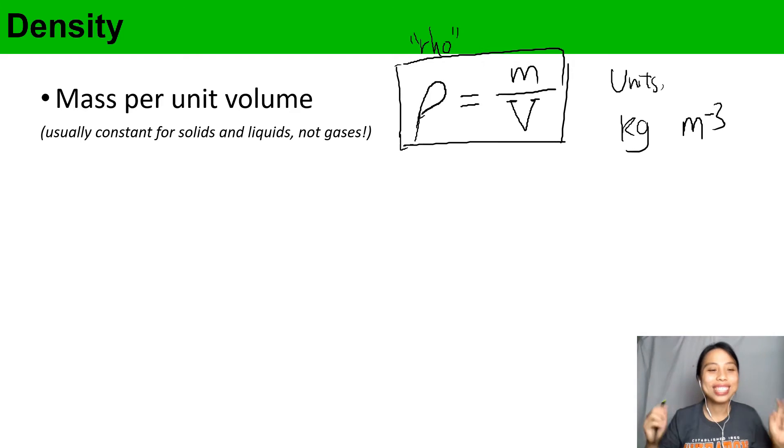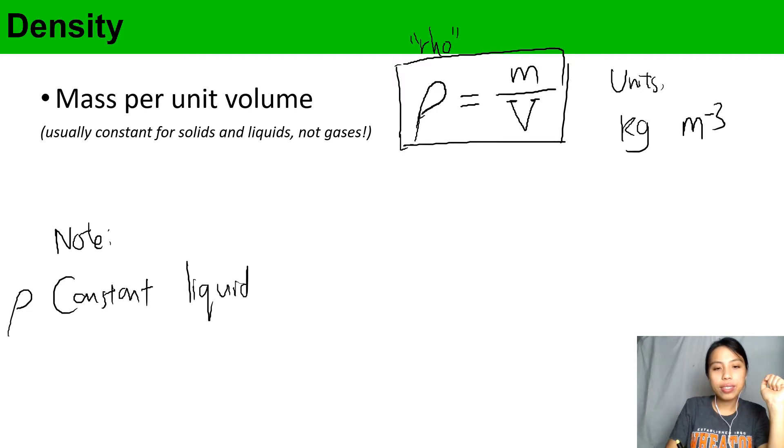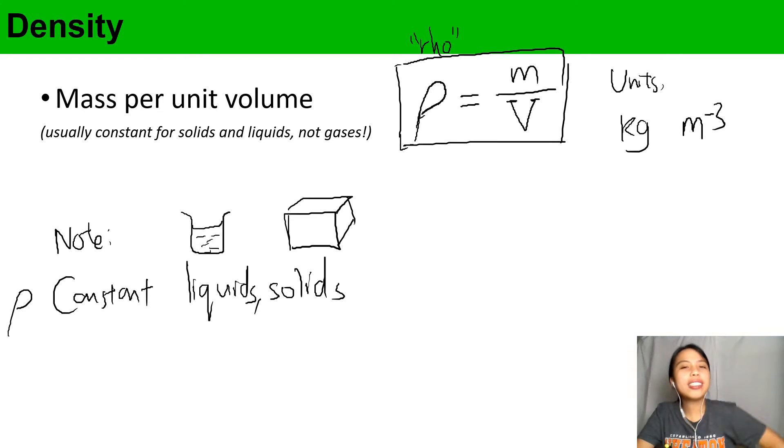Density is usually constant for solids and liquids, but gas may not be constant. Note: density usually is constant for liquids and solids. So solid, maybe you have a block of copper - if it's pure copper then you have a certain density. If it's liquid, a jar of water, then the same density. But gas, why is gas not exactly constant density?